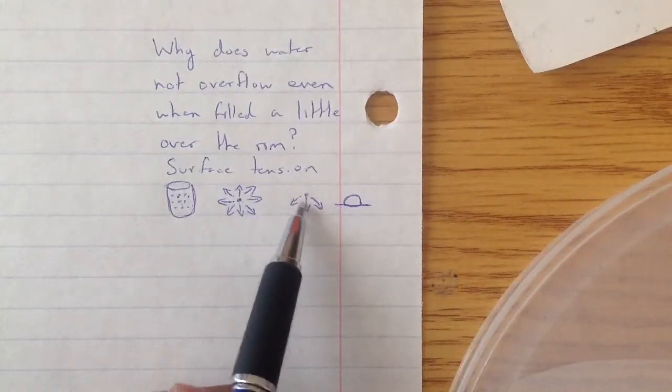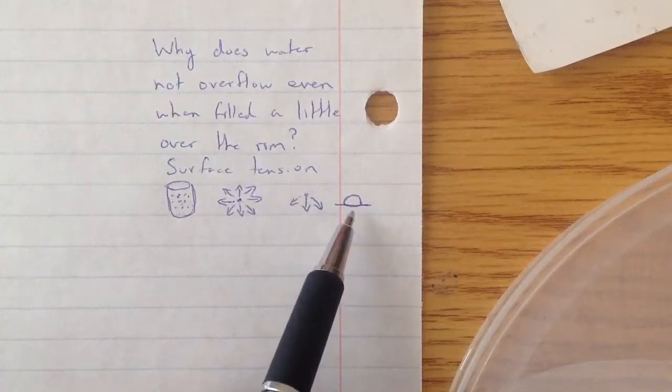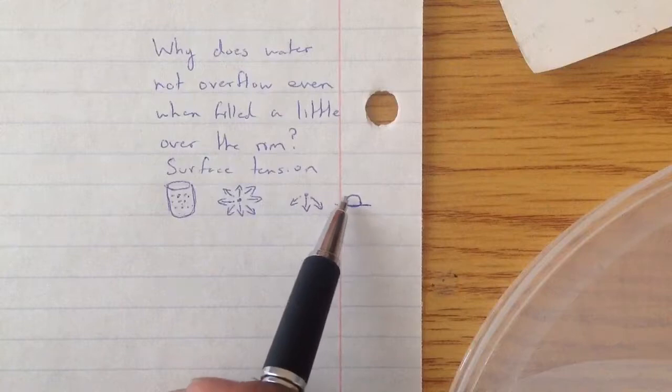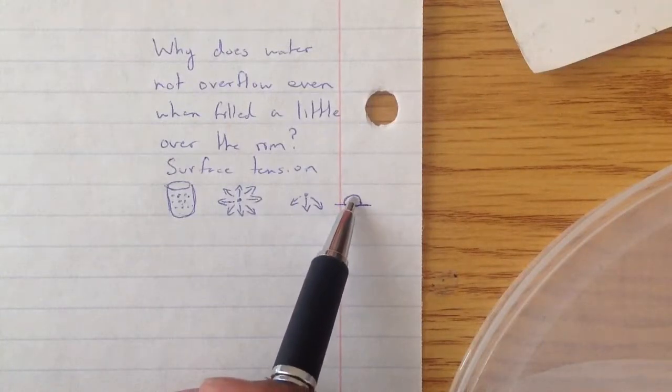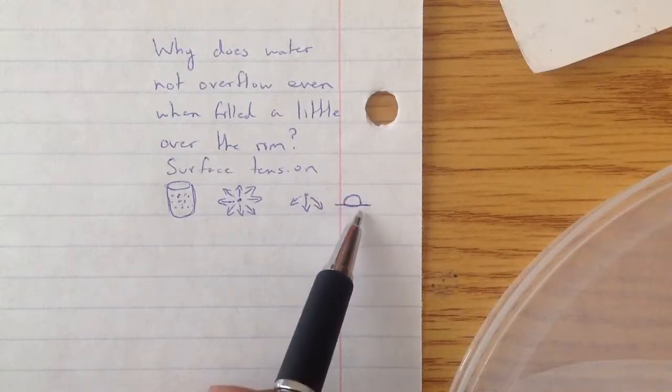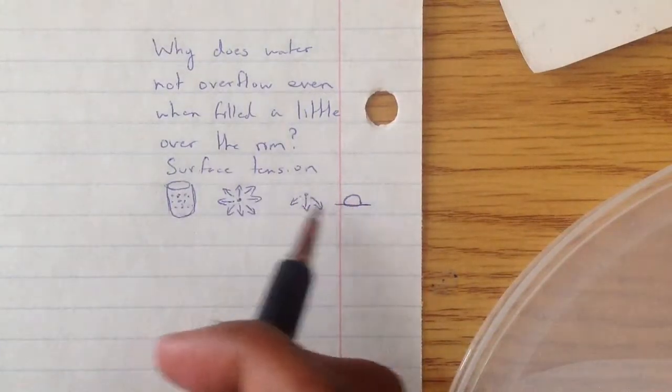Only water molecules below it are going to pull on it. So that's why when you have a drop of water on a surface, you have the bead of water that's curved, because at the top everything's being pulled inward. You get this curved appearance, and that's surface tension acting on it.